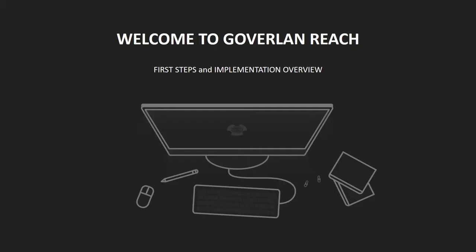Welcome to the Goverland Reach First Steps and Implementation Overview. Goverland Reach is a software solution that gives IT admins the ability to support users, computers, and servers no matter where they are located and without the need for a VPN. It is 100% self-hosted on-premise and does not depend on any cloud-based services. Your data stays with you.